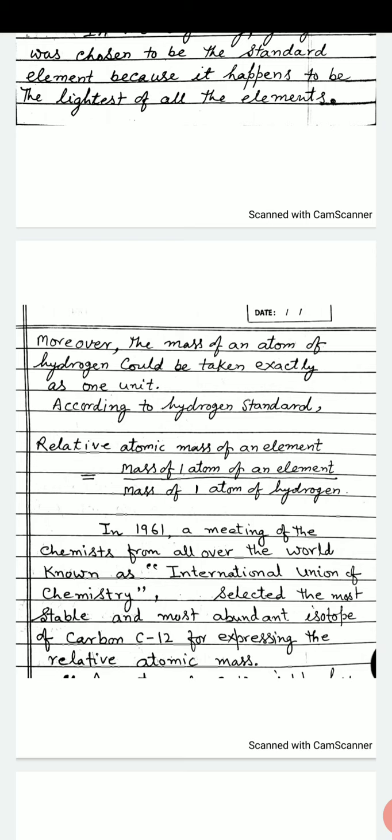According to hydrogen standard, relative atomic mass of an element is equal to mass of one atom of an element divided by mass of one atom of hydrogen.